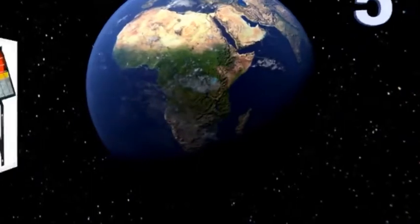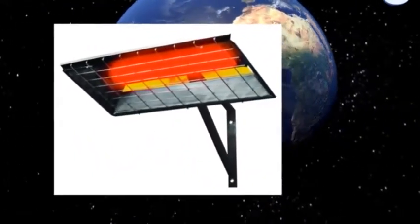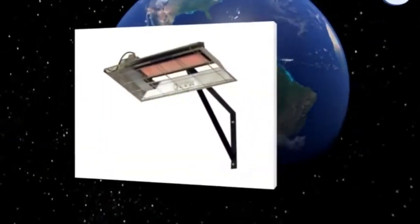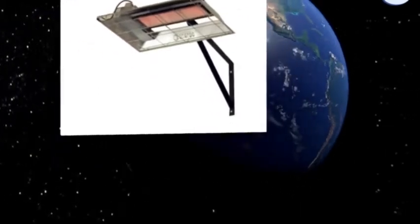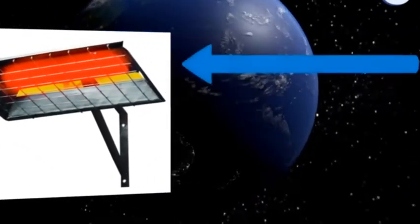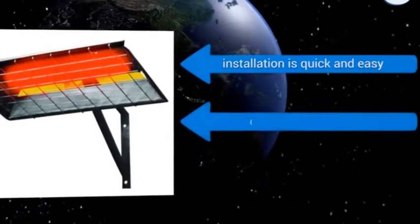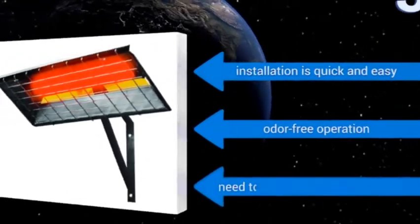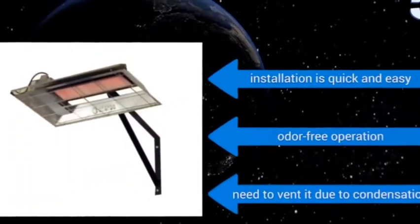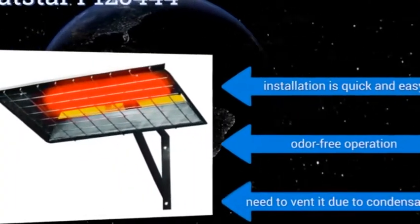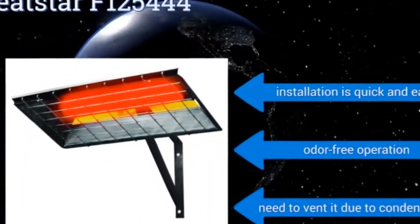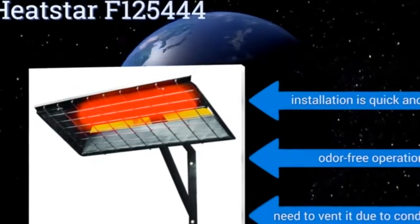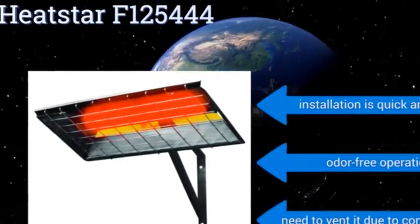After our power list at number 5, the Heatstar F125444 runs on natural gas and transfers almost all the fuel it burns directly into clean radiant heat. Compact and powerful, it can easily warm up a two-and-a-half car garage while staying out of your way and only taking up a small corner of the room. Installation is quick and easy and it operates without giving off any odors, but you do need to vent it due to condensation.